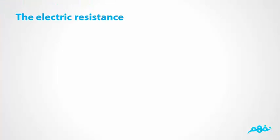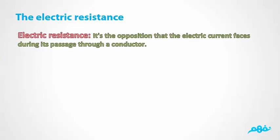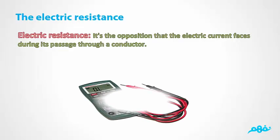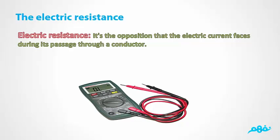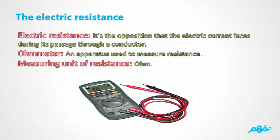The electric resistance is the opposition that the electric current faces during its movement in a conductor. It is measured using an instrument called an ohmmeter. The measuring unit of electric resistance is ohm. The ohm is the resistance of a conductor that has an electric current of 1 ampere and a potential difference between its poles of 1 volt.